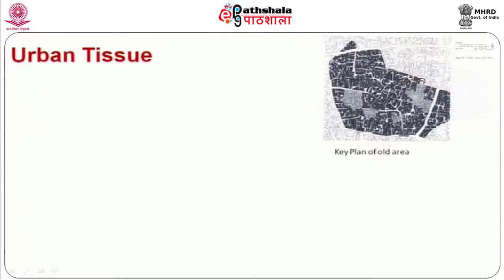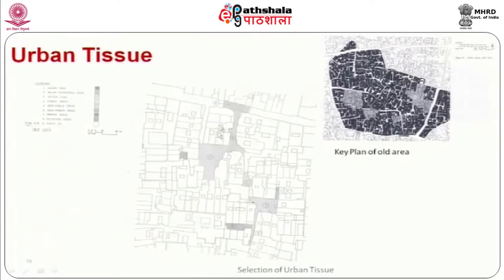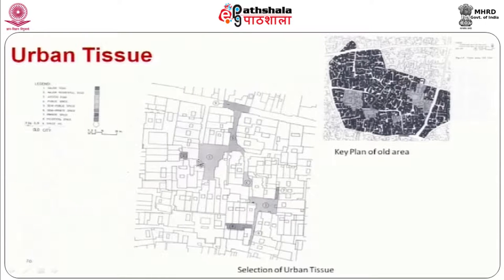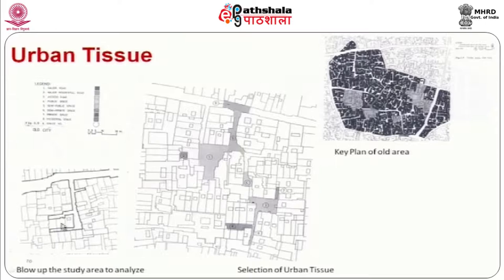I will talk about the tissue that exists in that area. These are the open spaces that are linked with each other through the network of streets, and it shows how each open space is different from the other. When we blow up to analyze this further, we also see pockets of courtyards. An urban tissue can essentially be measured in a 400 by 400 meter block, or in a 500 meter radius, depending on the scale and structure of the city.